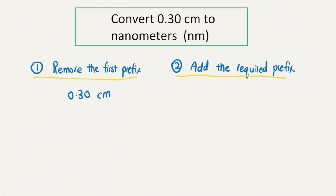In this video, we will learn a systematic way to convert a unit with a prefix to another unit with a different prefix. In this example, the first unit with the prefix is centimeters, and the second unit with the different prefix is nanometers.